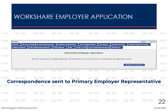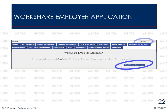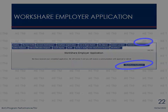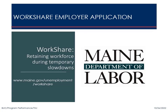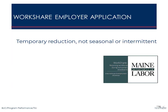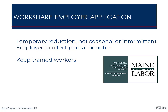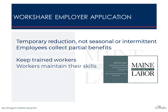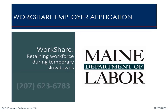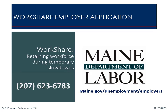This notification, as well as other correspondence related to WorkShare, will be sent to the email address entered for the primary employer representative in the application process. From here, you may enter the WorkShare dashboard or select Home to return to the Home screen. The WorkShare program helps employers during a temporary slowdown in work. If your business meets the criteria, employees may collect partial unemployment benefits to help offset the loss of income. WorkShare helps businesses keep trained workers and helps workers stay connected to jobs and maintain their skills. Thank you for your attention to this tutorial. If you have questions, customer service representatives are available at 207-623-6783, and additional information can be found at maine.gov/unemployment/employers.